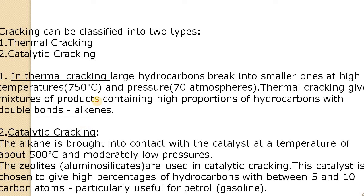In catalytic cracking, the catalyst used is aluminum silicate — a silicate cage-like structure with aluminum ions inside. These are zeolites, which have significance in this cracking method — you may know zeolites are also used as ion exchange resins. This catalyst is particularly chosen because it gives a high percentage of hydrocarbons with 5 to 10 carbon atoms.